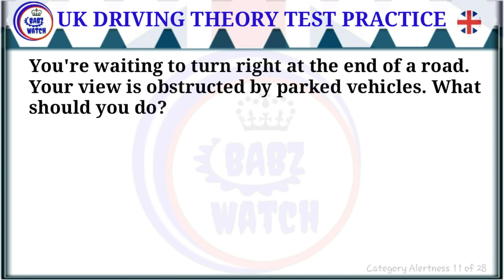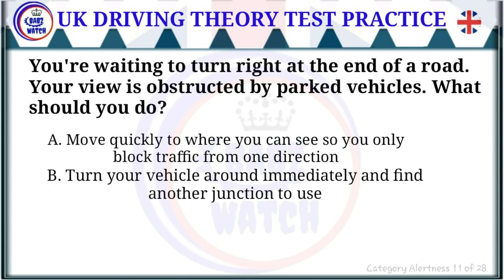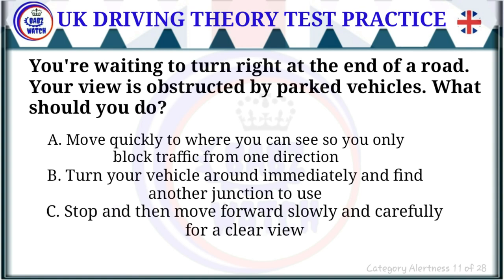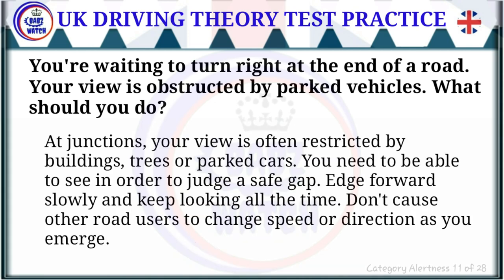Question 11 of 28: You're waiting to turn right at the end of a road and your view is obstructed by parked vehicles. What should you do? The correct answer is: stop and then move forward slowly and carefully for a clear view. At junctions your view is often restricted by buildings, trees or parked cars. Edge forward slowly and keep looking, without causing other road users to change speed or direction.